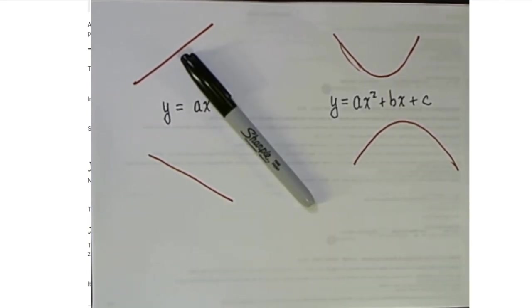Quadratic functions have the form y equals ax squared plus bx plus c. In this case, when a is positive, this leading coefficient is going to be an opening up parabola. And when that a is negative, it's going to be an opening down parabola.